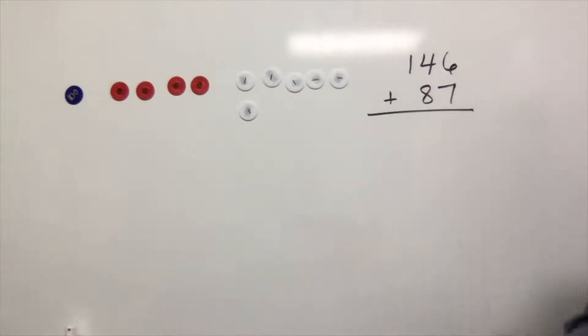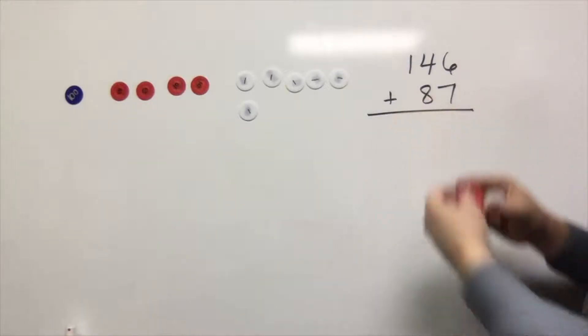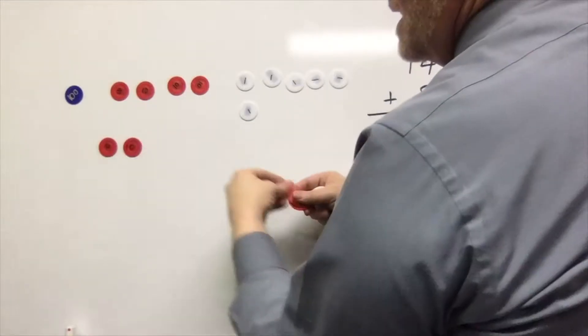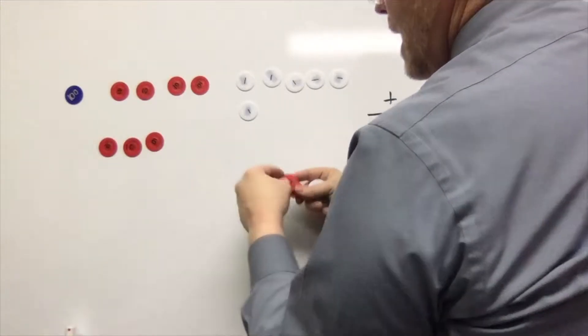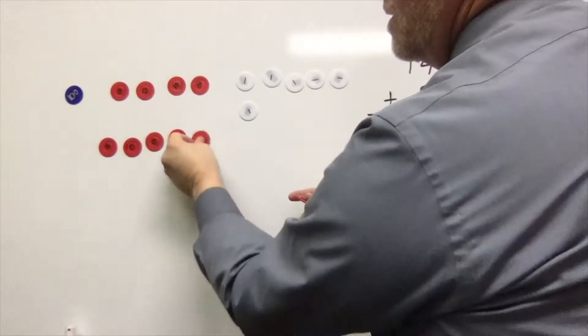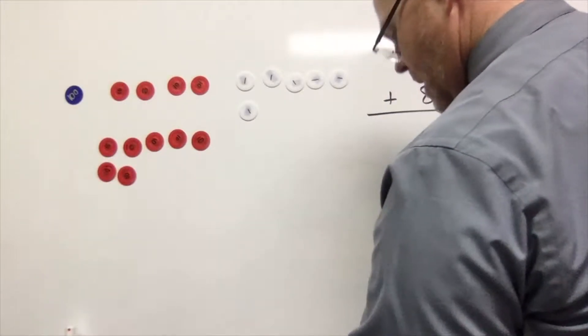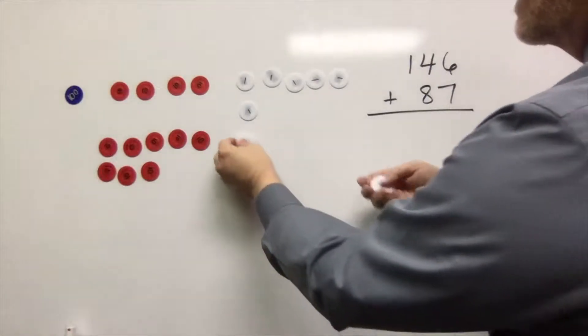We're going to be building on the fact that we understand what 87 means. 87 means we have eight tens and of course we're going to have seven ones. So there's our eight tens and then we're going to have seven ones.